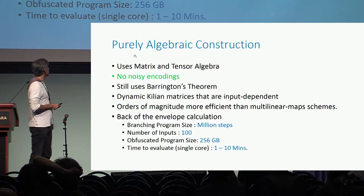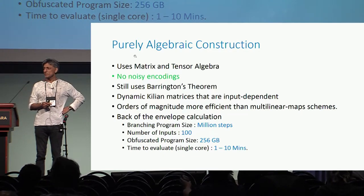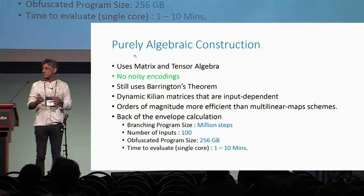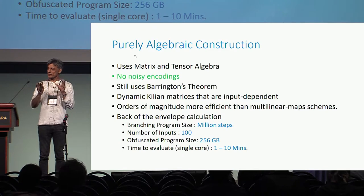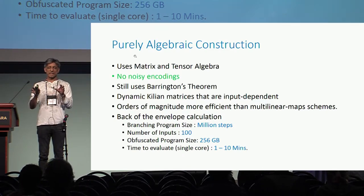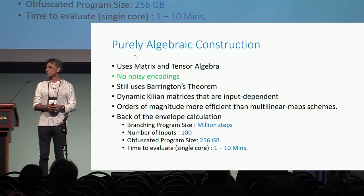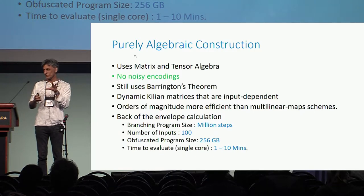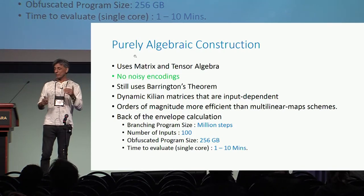The main idea is that we take a branching program, and normally you could try doing a Killianization of all the matrices in your branching program matrix product. That obviously is not secure, so what we really have to do is build these Killian matrices in a dynamic fashion — meaning the Killian matrix will actually depend on the input on which you're trying to evaluate the program. These Killian matrices for each input will yield a completely new random Killian matrix, but we have to give you some gadgets to be able to implement this strategy.